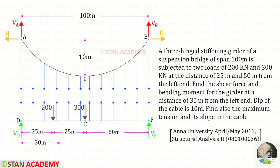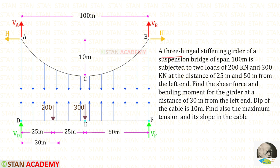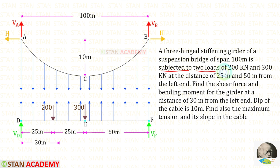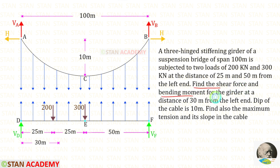Hello everyone. Today we are going to do a problem based on suspension cables. Let us read the question and draw the diagram. A three-hinged stiffening girder of a suspension bridge of span 100 meters is subjected to two loads of 200 kilonewton and 300 kilonewton at distances of 25 meters and 50 meters from the left end. Find the shear force and bending moment for the girder at a distance of 30 meters from the left end. The dip of the cable is 10 meters. Find also the maximum tension and its slope in the cable.